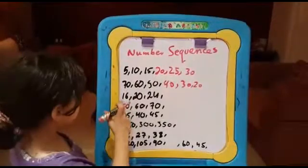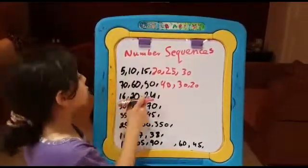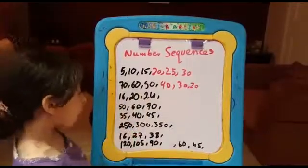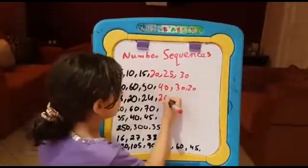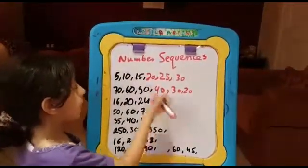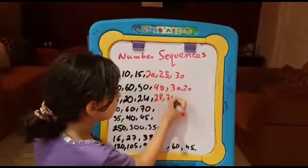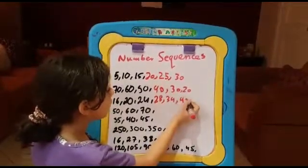Now here we have 16, 20, 24. The rule is adding 4. Now we have 28, then 34, then 40.